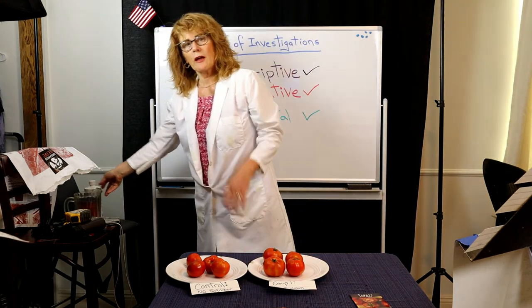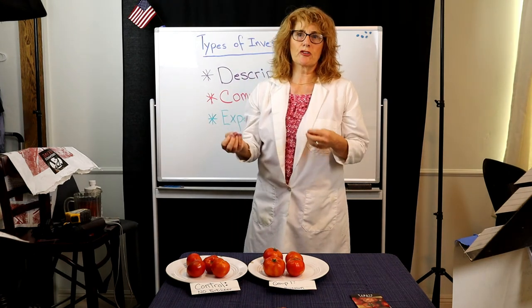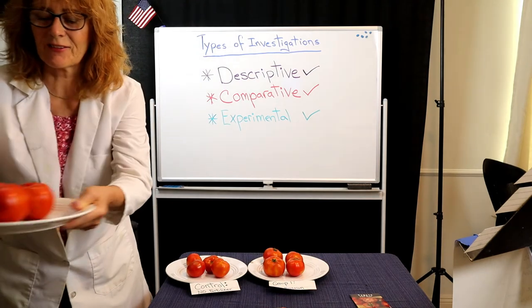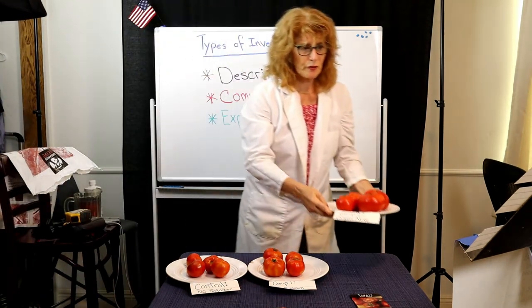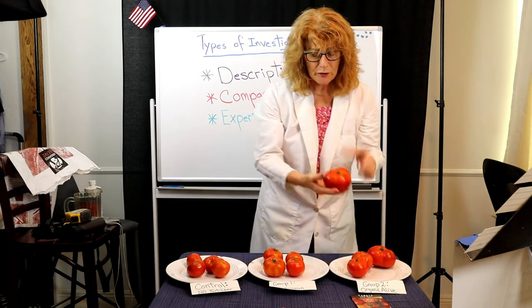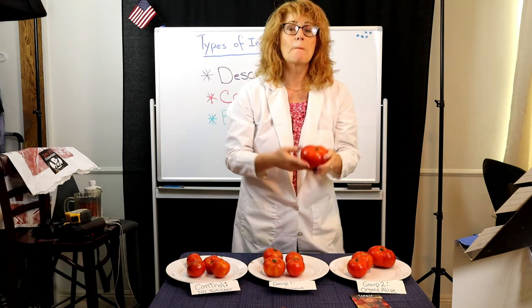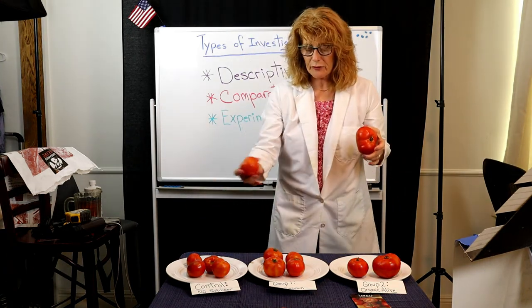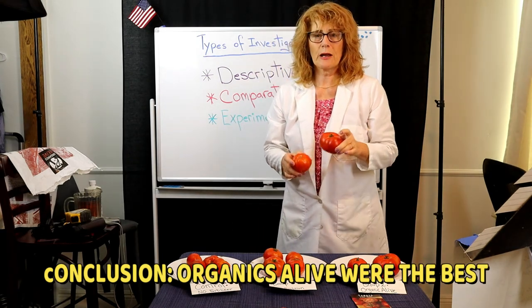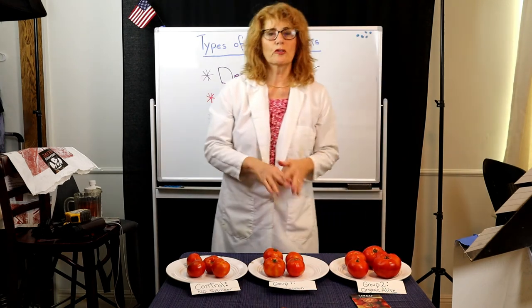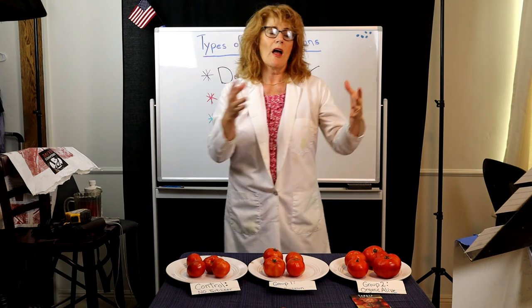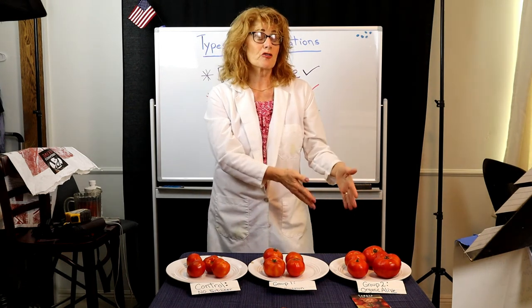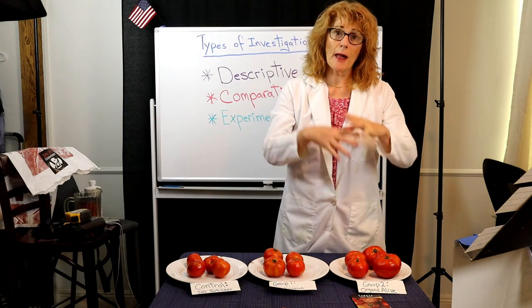Now the third group — this is where my concluding information really took a change. The Organics Alive group: not only were these a lot bigger — some of them were amazingly bigger — but they were also much sweeter. Even though both fertilizers were organic, these tomatoes were just so much bigger, and it wasn't just one or two. Throughout the growing season and harvesting season, I concluded that the Organics Alive had grown much better, sweeter, healthier, and bigger tomatoes.